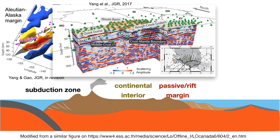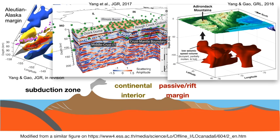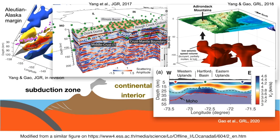Moving away from the continental interior, we get to the passive margin, where we have an extensional environment. I studied the Atlantic Mountains with a high-resolution image beneath the mountain area. Across the half-graben basin, which is a rift basin, we constructed a high-resolution crustal image, which revealed a high-velocity crustal root — helping us understand the underplating process during rifting.